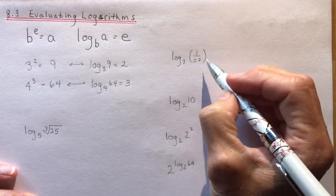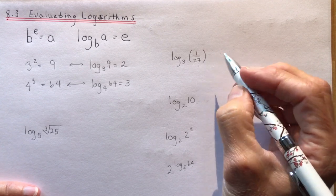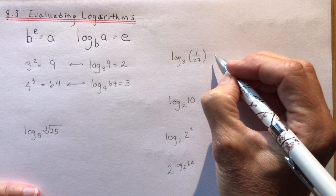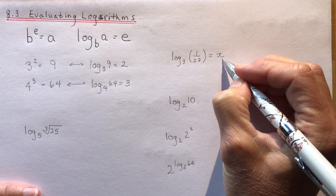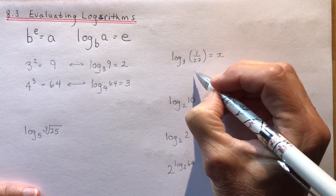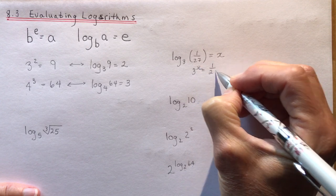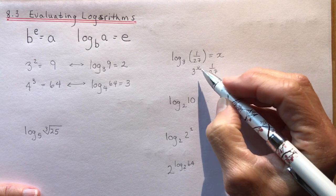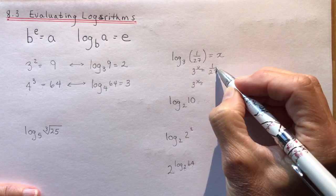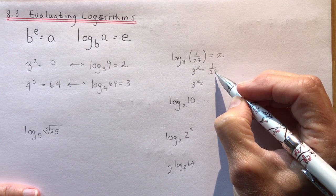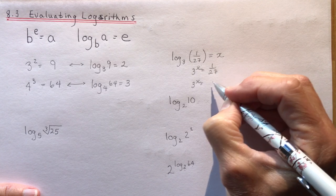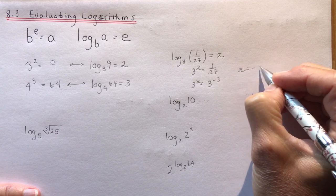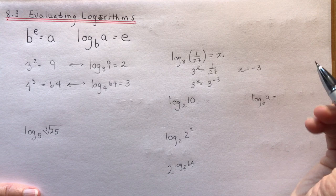Let's try some more difficult ones — these are all examples from your homework. Log base 3 of 1/27: I want to know what the answer is, so I let that equal x, meaning 3 to the power of x equals 1/27. Since 1/27 is 3 cubed over 1, that means 3 to the negative 3, so once the bases are the same, x equals negative 3. You can always double-check your work on these, which is what's so nice about them.